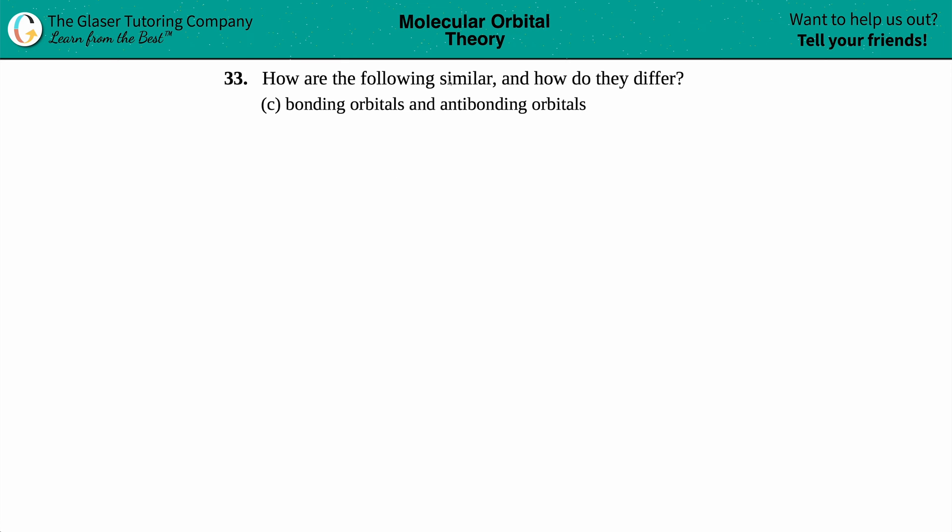Number 33: how are the following similar and how do they differ? We have letter c, so in this case we have to talk about the similarities and differences between bonding orbitals and antibonding orbitals.